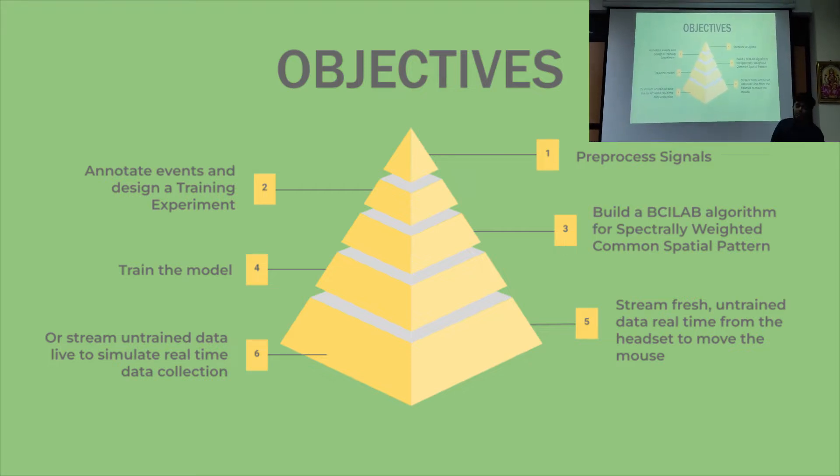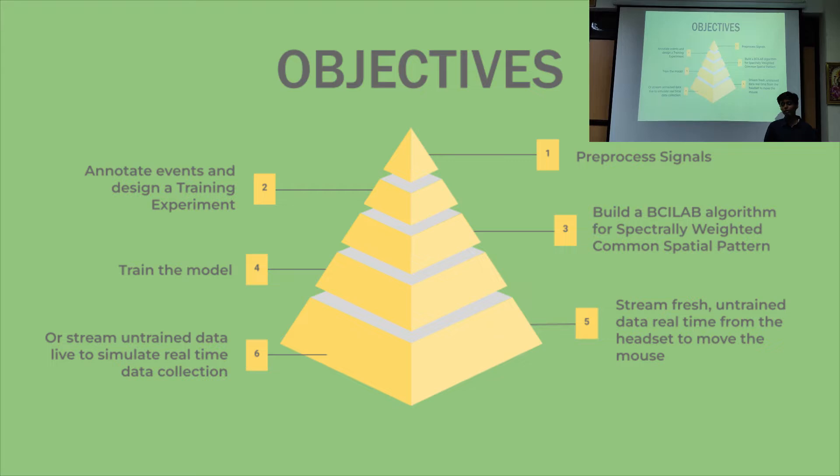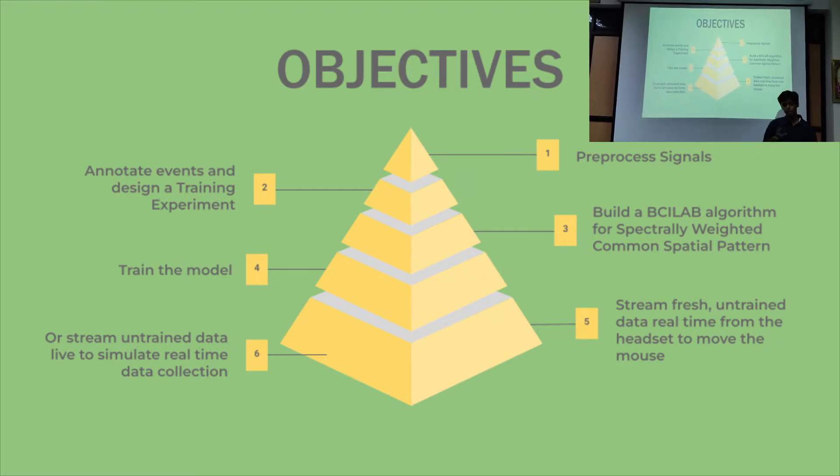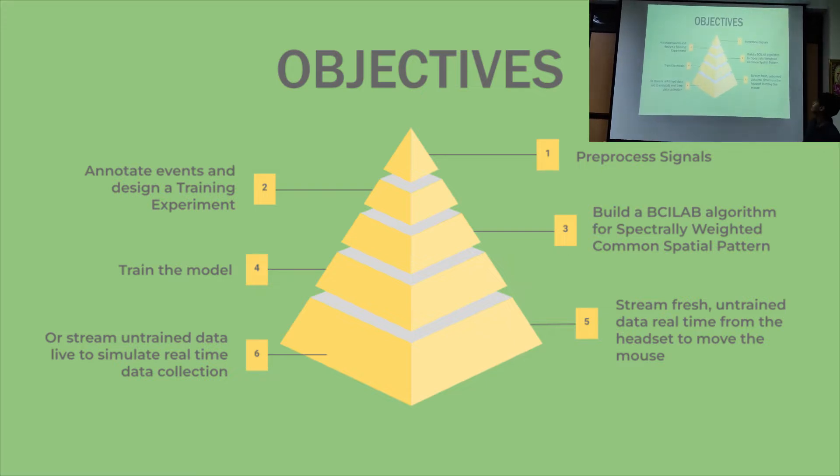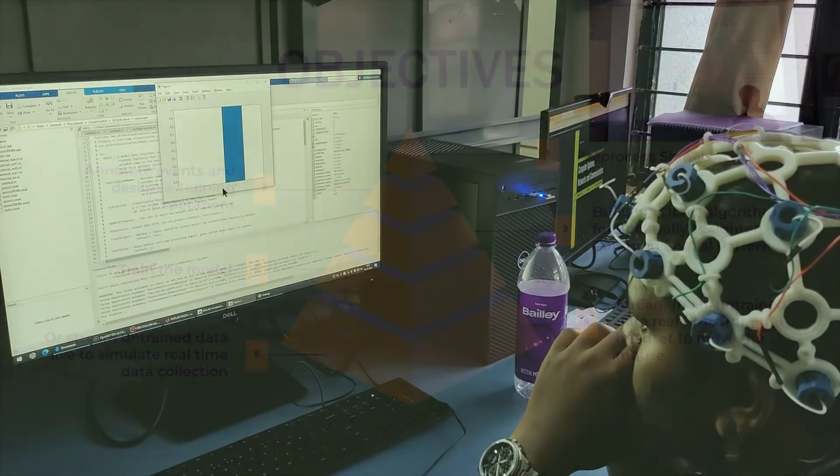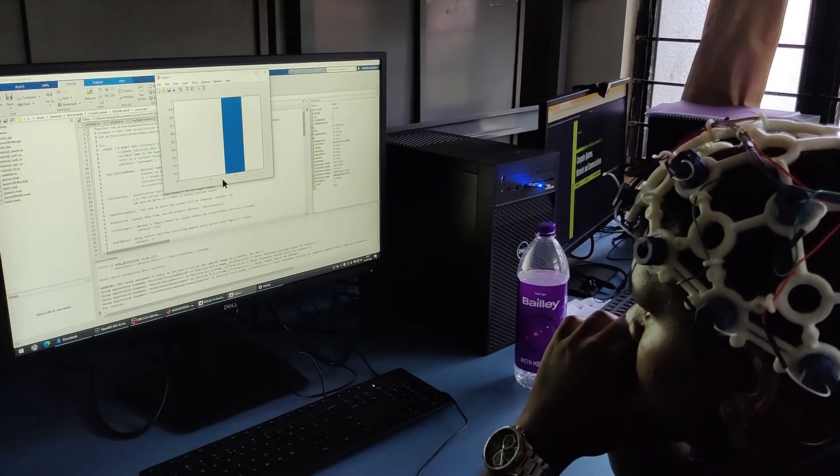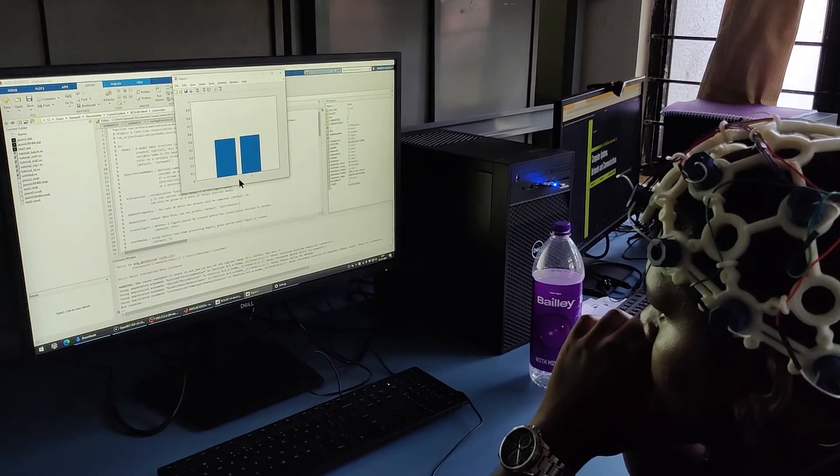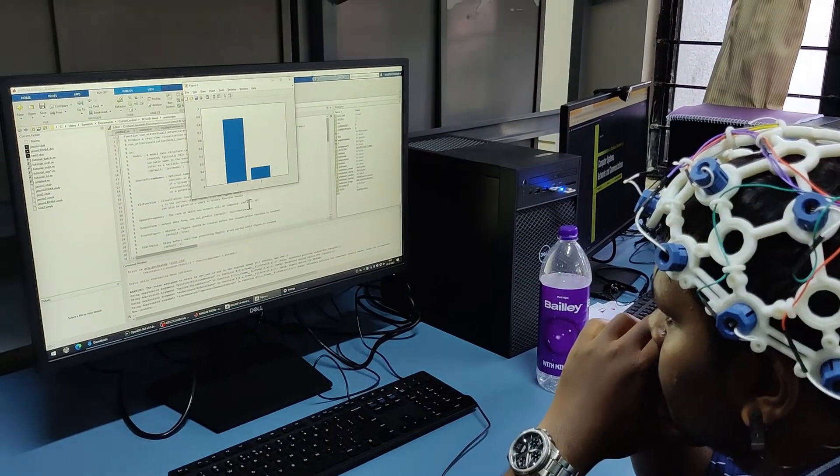The next step was to build something called BCI lab algorithm. BCI lab algorithm is the entire processing chain including some preprocessing, some feature extraction and then finally going into the linear discriminant analysis classifier. We had to annotate events whenever our subject was imagining the movement of left and right hand. We had to mark the digital events on two different channels on the headset so that the classifier would know at what times the action was happening.